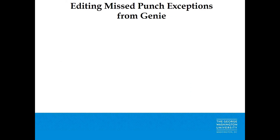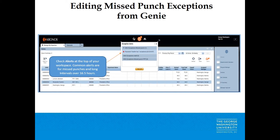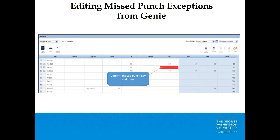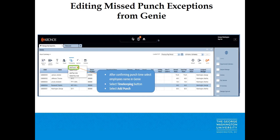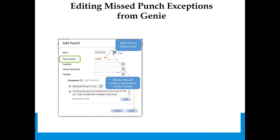Editing Miss Punch Exceptions from the Genie: Check alerts at the top of your workspace — common alerts are for missed punches and long intervals over 16.5 hours. After confirming the missed punch day and time, select the employee's name in the Genie, select the Timekeeping button, and select Add Punch. An Add Punch box will appear. Enter the time in military time, add the day, time, and comment, and a secondary transfer if needed. Select Apply.